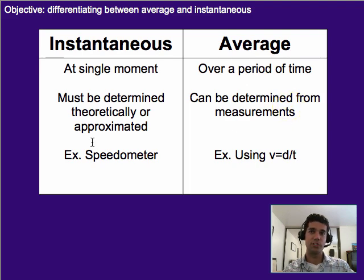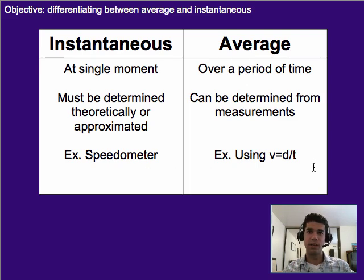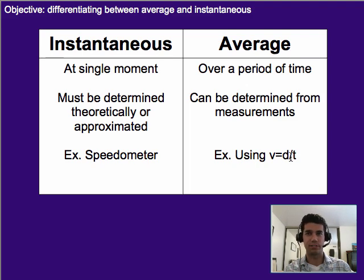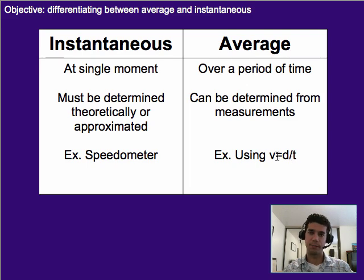The average velocity can be determined from measurements, the way we normally calculate. An example of seeing instantaneous velocity is basically a speedometer — it gives you a real-time sense of your speed. Whereas calculating your average velocity uses distance over time. For example, if you went 400 miles in four hours, your average velocity was 100 miles per hour. That's an example of where average comes into play.